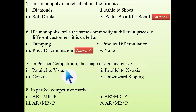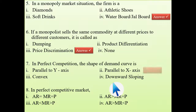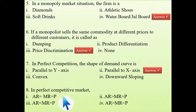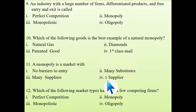Seventh question: in perfect competition, what is the shape of the demand curve? The demand curve is perfectly elastic, meaning it is parallel to the x-axis. Eighth question: in a perfect competitive market, average revenue equals marginal revenue equals price — that is what the demand curve represents, so the answer is option one.